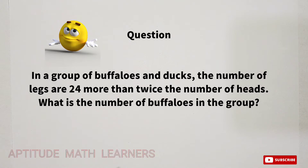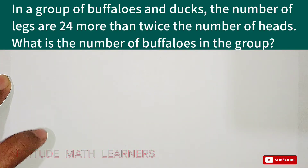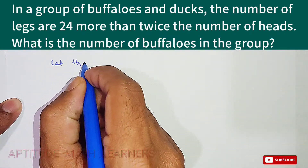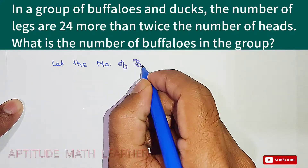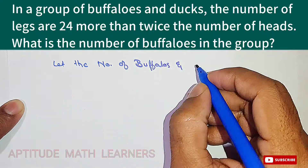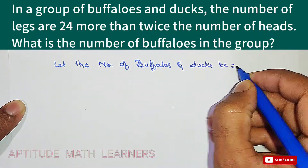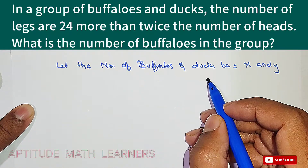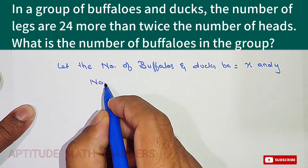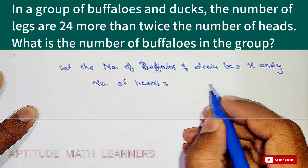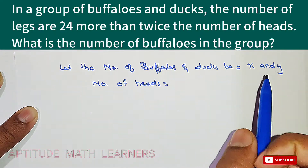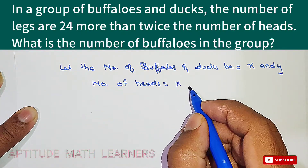We need to find the number of buffaloes. Let the number of buffaloes and ducks be x and y respectively. The number of heads is equal to x plus y, since each animal has one head.